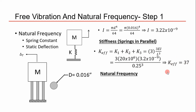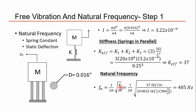Analyzing this as a single degree of freedom system, the natural frequency equation is one over two pi times the square root of stiffness over the mass of the end load. We converted weight to mass by dividing by the acceleration due to gravity, and we get a natural frequency of 405 hertz.